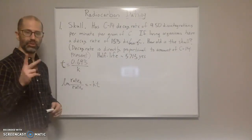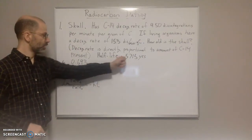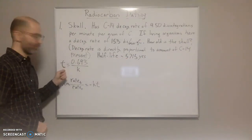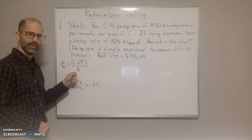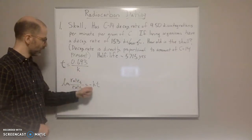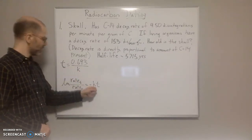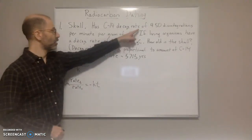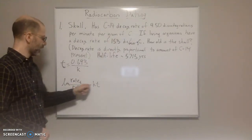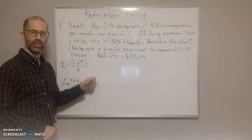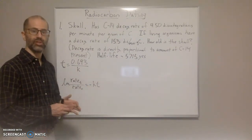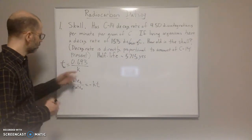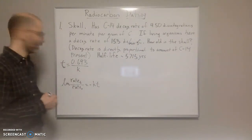This particular problem is going to have two steps. The first step is we're going to plug in the half-life here to find our rate constant. Once we find the rate constant, we can plug it in and put the rates in that we have here. And we can solve for t, which is going to be the time or the age of the skull.